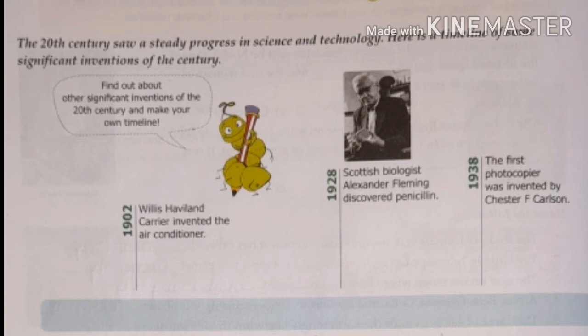The first invention is from 1902 — Willis Haviland Carrier invented the air conditioner. Willis Haviland Carrier ne air conditioner ko invent kiya tha 1902 mein.